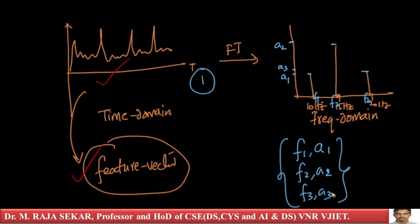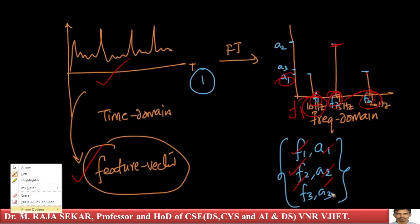You get frequency one — let's say 10 hertz — frequency two, and frequency three. Frequency one has a corresponding amplitude: f1 is frequency 1, a1 is the corresponding amplitude; f2 is frequency 2, a2 is its amplitude; f3 is frequency 3, and a3 is the corresponding amplitude.